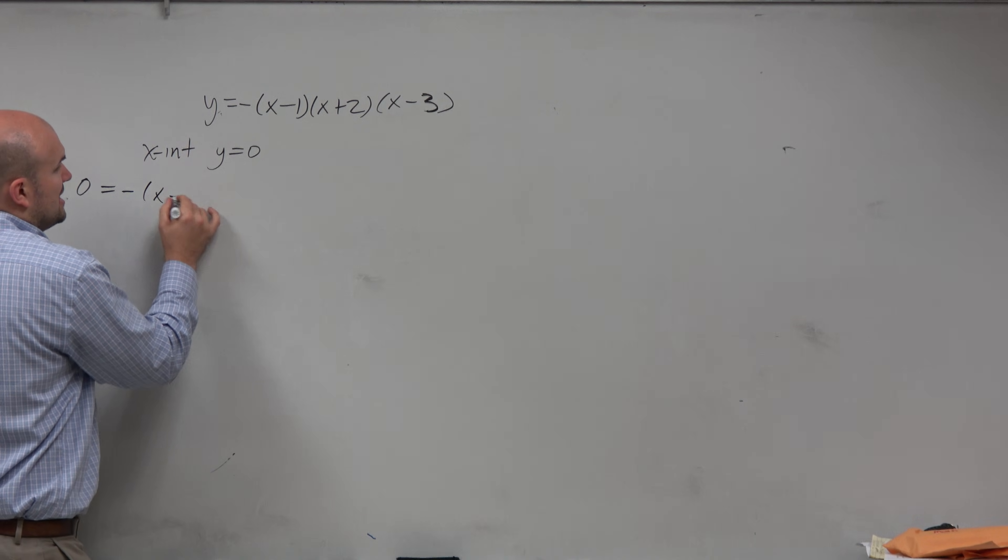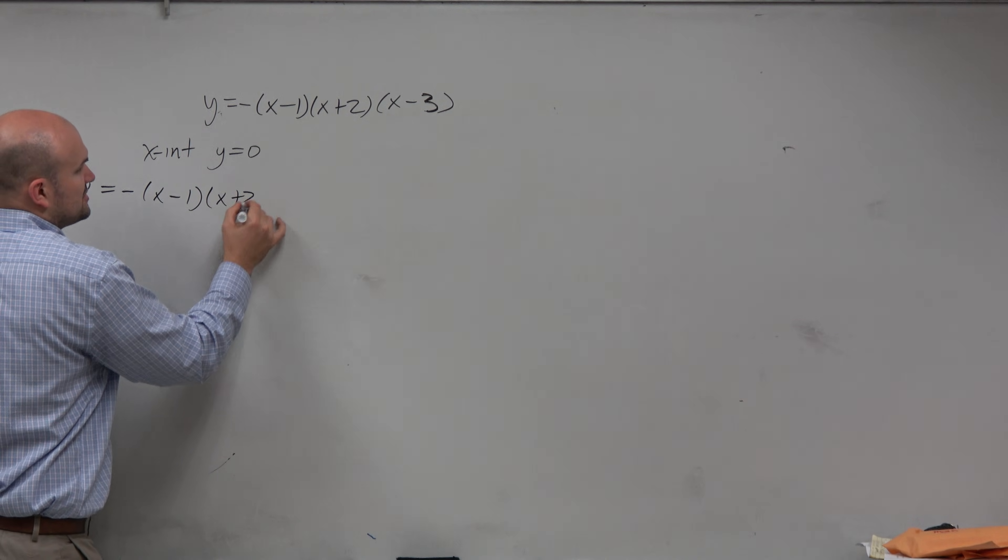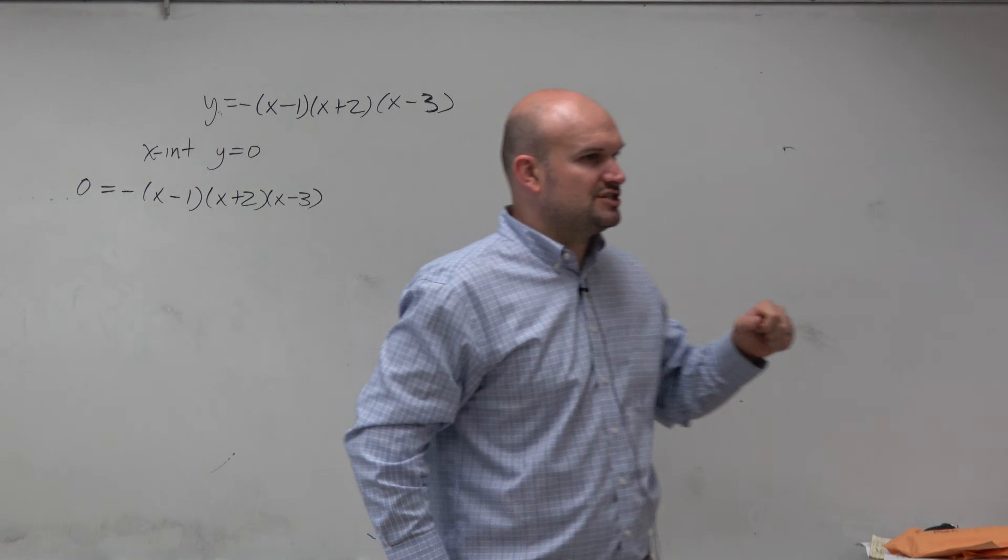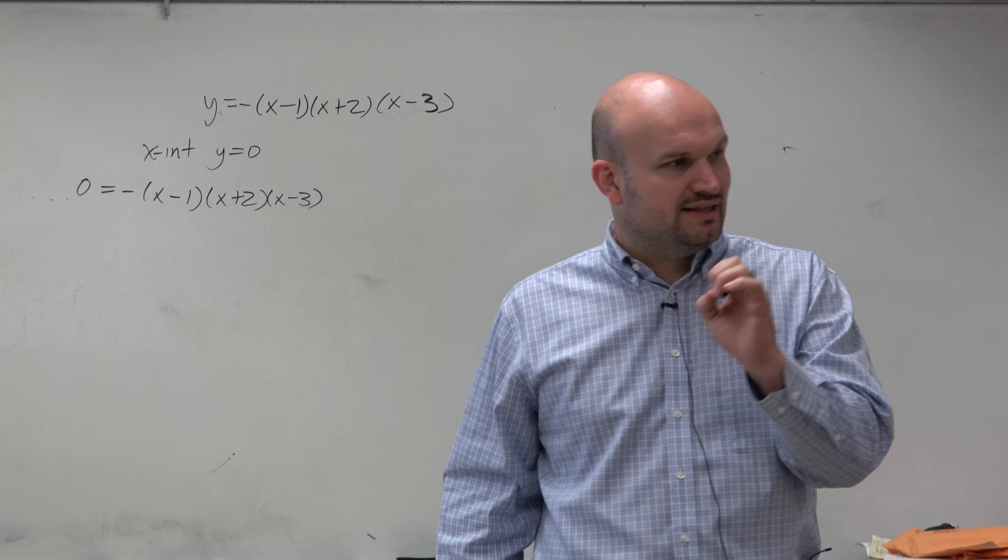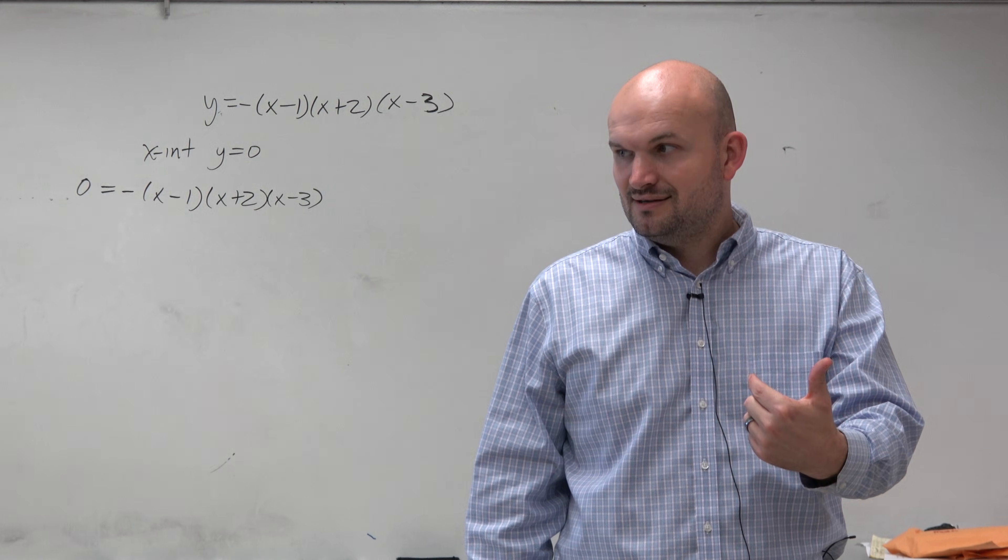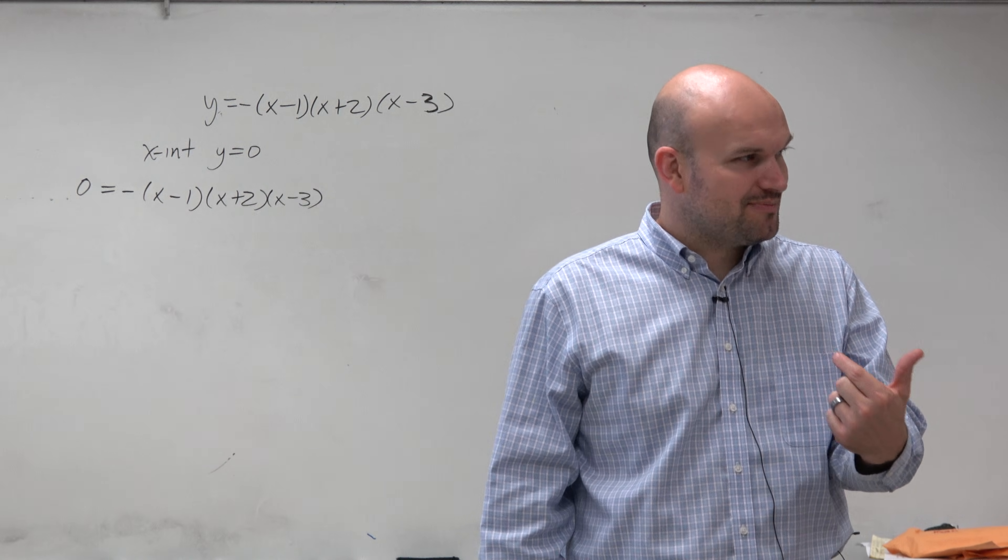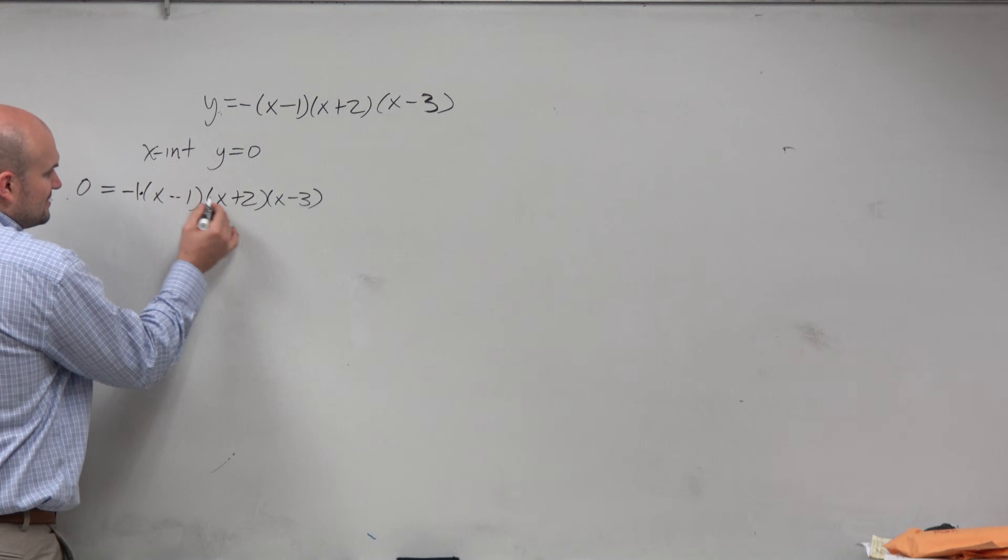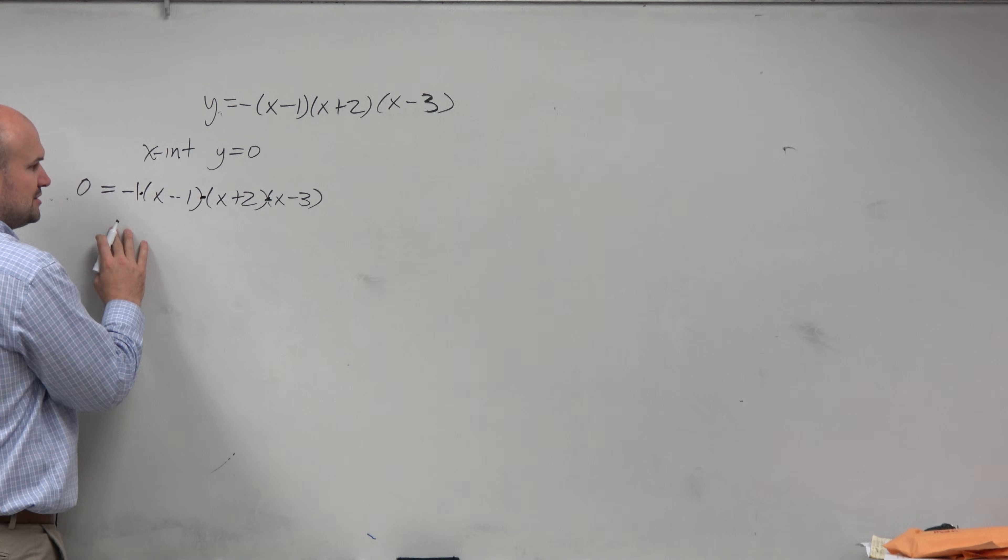So I have negative times x minus 1 times x plus 2 times x minus 3. And the cool thing about this is I just have 0. So if I want to find the x-intercept when a product is equal to 0, I can apply the zero product property, which basically states you have the product times all these values, set them each equal to 0.